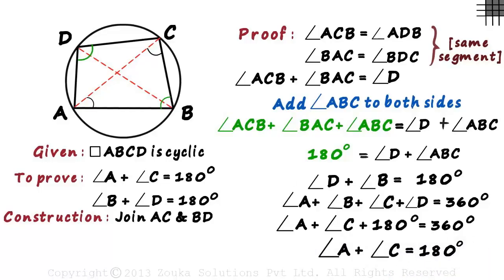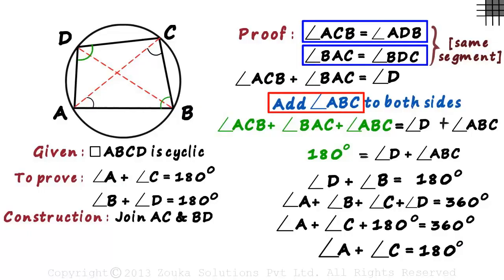This was a bit long, but remember, the most important part of the proof was to look for equal angles in a segment and adding an angle to get the sum of all angles of one triangle.